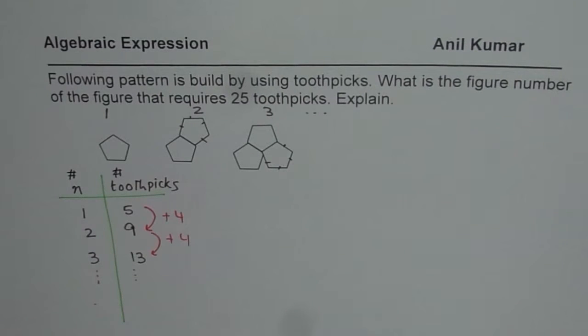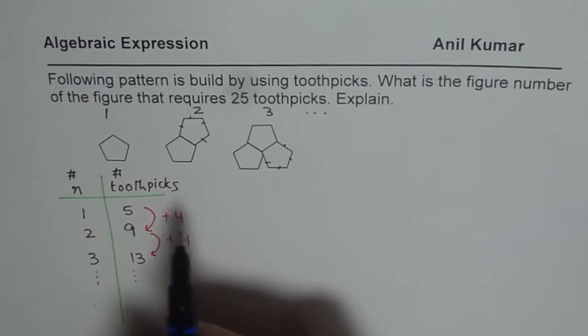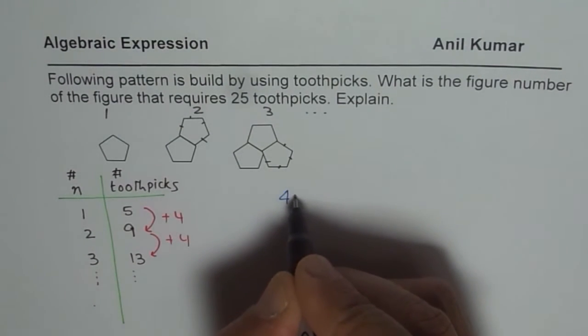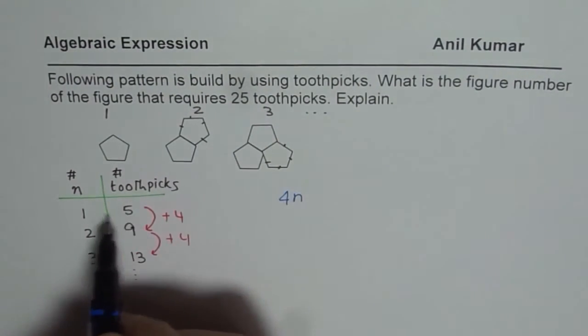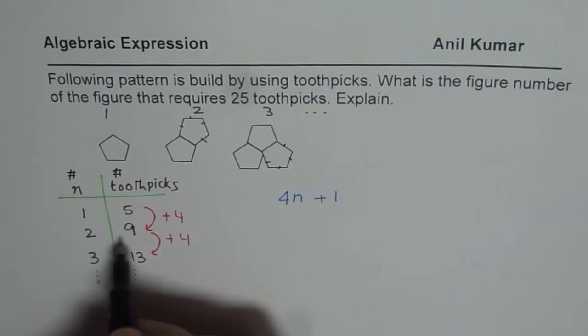However, at times, this number could be very, very large, right? So in that case, it could be time-consuming. The alternate method here is to form an expression. So the expression is related with 4 times since we are adding 4. So 4 times N is what? 4 times 1 is 4. How do I get 5? I get 5 by adding 1. 4 times 2 is 8. How do I get 9? Adding 1.